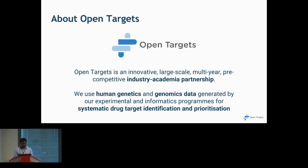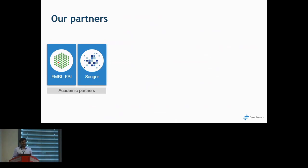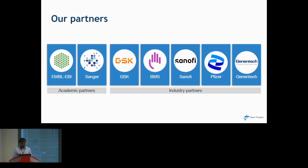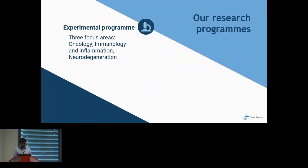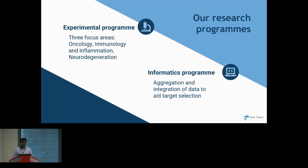Our industry-academia partnership includes seven different complementary institutions. There are two academic institutions — EMBL-EBI and the Sanger Institute — with expertise in handling life sciences data and generating experimental data. We have five industry partners: GSK, BMS, Sanofi, Pfizer, and Genentech, who bring the industry perspective on drug target identification and expertise in therapeutic areas. We also have a research program focused on oncology, immunology, inflammation, and neurodegeneration, generating target-centric data. Our informatics program aggregates all this data, along with publicly available data, and provides it through two portals.